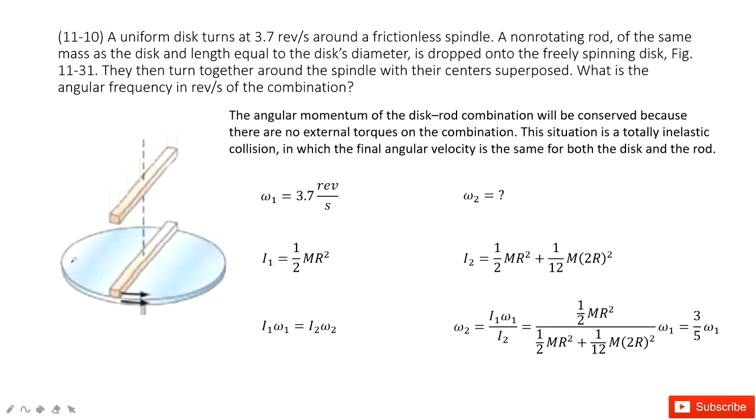Chapter 11 is about angular momentum. For this system, we can see initially we know the angular momentum. Omega 1 is given. This is only for the disk.